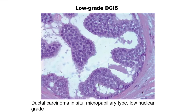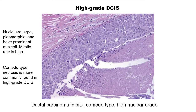Here is another example of DCIS of the micropapillary type, low nuclear grade. Here is an example of high-grade DCIS of the comedotype, with central necrosis that has an expansile appearance, markedly atypical nuclei, prominent nucleoli, and mitotic activity. This is high-grade DCIS.